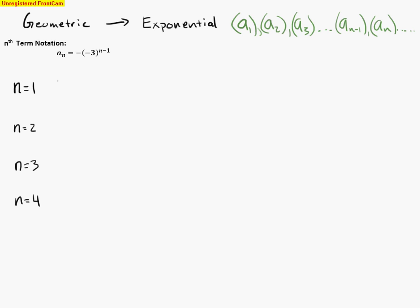If you need help with a geometric sequence with nth term notation, one of our examples is given right here. I have a_n equals negative times negative 3 to the n minus 1.